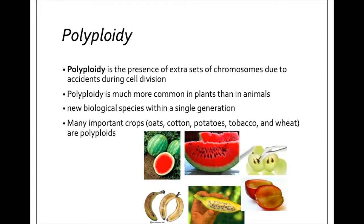A lot of the crops and plant products you're familiar with are polyploid. For example, apples, bananas, ginger, and watermelon are all triploid — and these are the ones you find in the grocery store. Cotton, potato, leeks, tobacco, and peanuts are mostly tetraploid. Red wheat and oats are hexaploid. Most strawberries and sugarcane are octoploid. So this is very common.